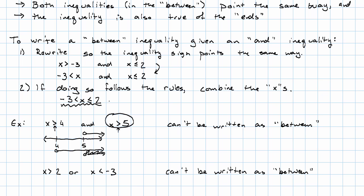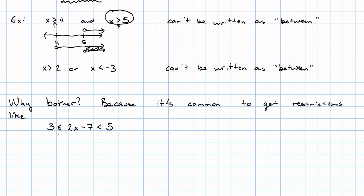Why do we even have this? Well, very often we get restrictions that look something like this. 3 is less than or equal to some expression with an x in it, which is less than 5. It's very common to naturally get an inequality, where some expression with a variable in it is between two numbers. This is, in fact, kind of the most natural sort of compound inequality to get in an application.